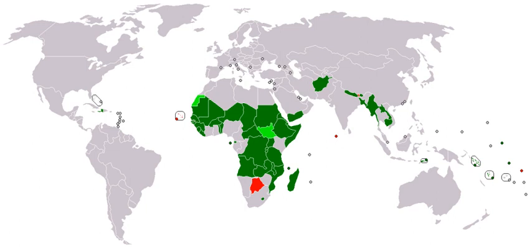There is an association between low income and high population growth. The development of a country is measured with statistical indexes such as income per capita, gross domestic product per capita, life expectancy, the rate of literacy, freedom index and others. The UN has developed the Human Development Index (HDI), a compound indicator of some of the above statistics, to gauge the level of human development for countries where data is available.